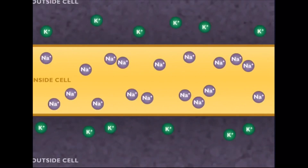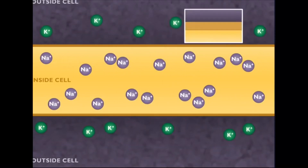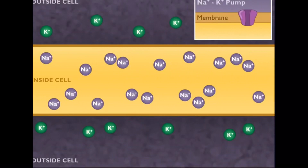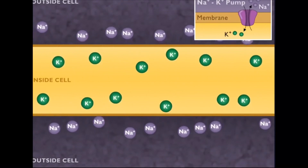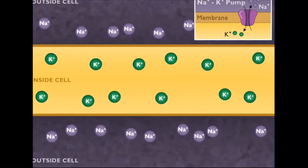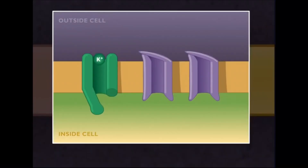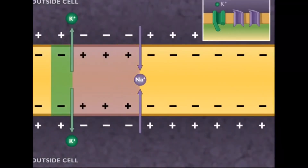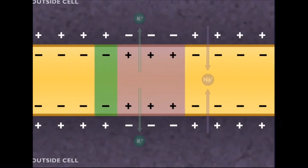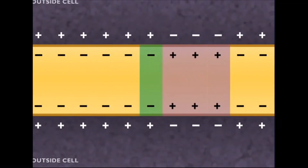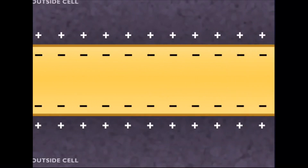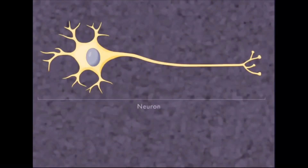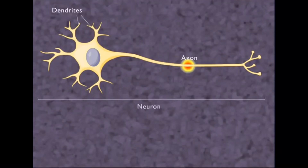The outer surface of the plasma membrane of the neuron is positively charged and the inner surface is negatively charged. This is due to the difference in the distribution of certain ions. When stimulated, the distribution of ions in that particular part changes. As this process proceeds, impulses get transmitted as electric charges.